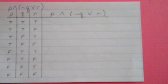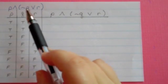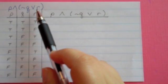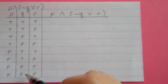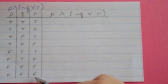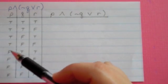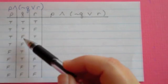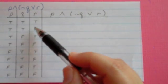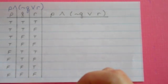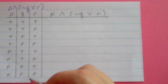Same directions here — construct a truth table for this statement. When I look at this statement, I notice I have a P, a Q, and an R, so it's going to be my basic setup of a three-statement truth table, and we've seen that that one is eight lines. Under P, you have four trues, four falses. Q: two trues, two falses, two trues, two falses. And finally, under R, you alternate. This gives you every combination of truth values for P, Q, and R.